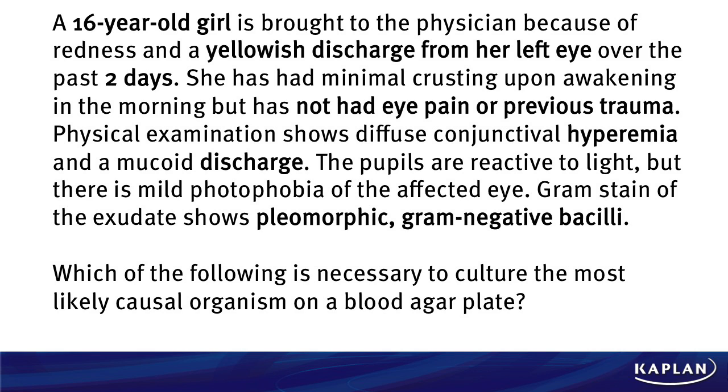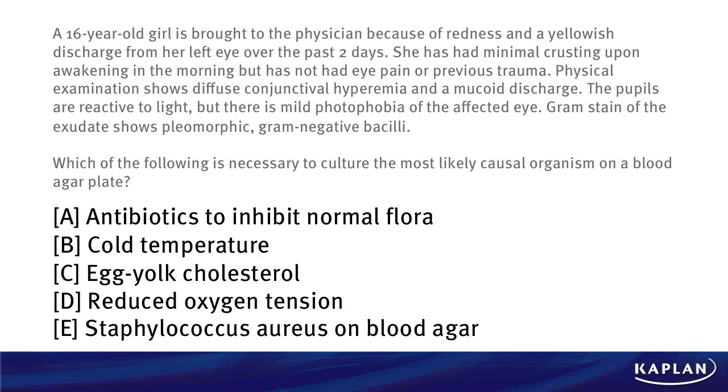Which of the following is necessary to culture the most likely organism on a blood agar plate? This is a great question because it's not just asking you what the bacteria is. It's saying: you probably figured out what the bacteria is — great. But in order to get this question right and get those higher points on test day, we want you to know how we actually culture this organism. So let's look at the answer choices. A: antibiotics to inhibit normal flora. B: a cold temperature. C: agiocholesterol. D: reduced oxygen tension. E: Staph aureus on blood agar.